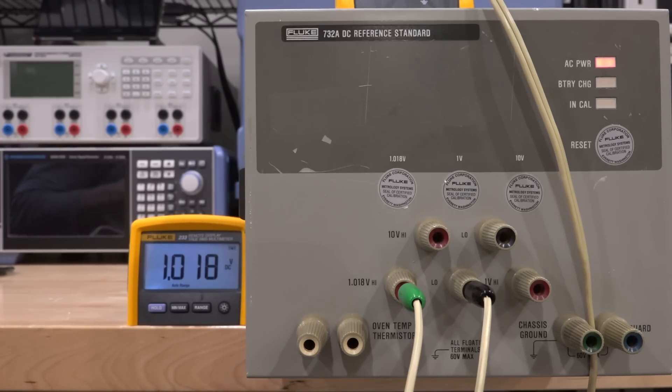The way the 1.018 and the one volt output are derived is through voltage division in some precision resistors. That's a whole other story we can talk about in the next video, but if I go to the one volt output I get absolutely nothing.